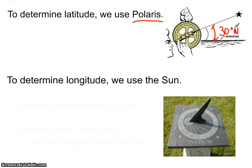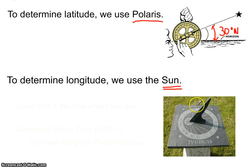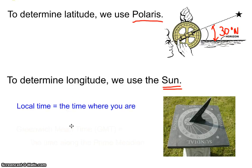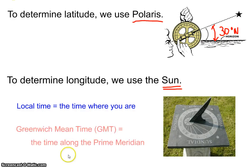Determining longitude is a little more complicated because it requires a couple of different steps. To find longitude, ancient sailors had to use the motions and position of the sun — specifically, they had to figure out what time it was in two different places: first, their local time on the ship, and second, the time back in Greenwich, England along the Prime Meridian, known as Greenwich Mean Time or GMT.